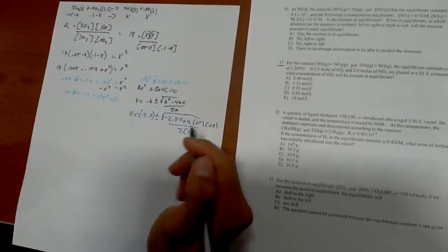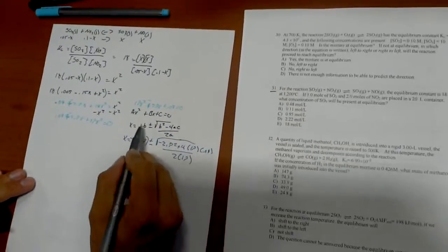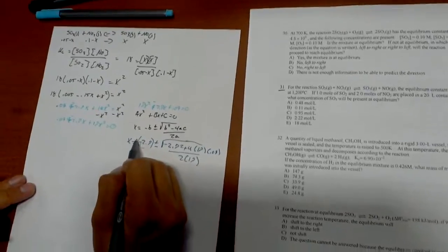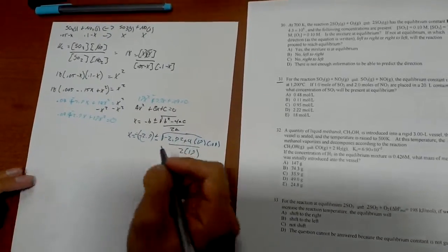Putting this in the calculator you can solve it. Keep in mind that the b is negative, so this one's already negative. This will turn this into a positive, so then it will be a positive 2.7.